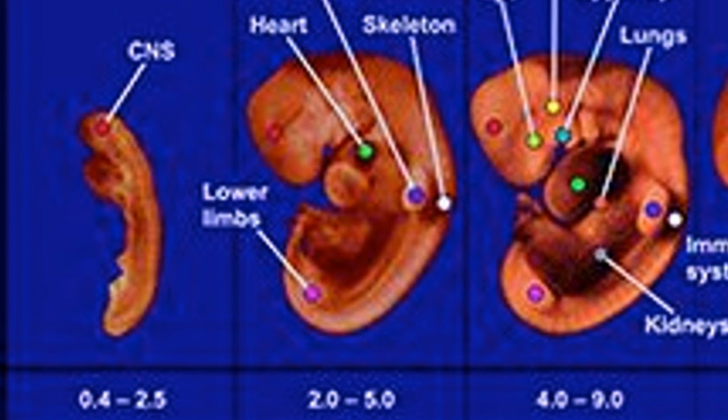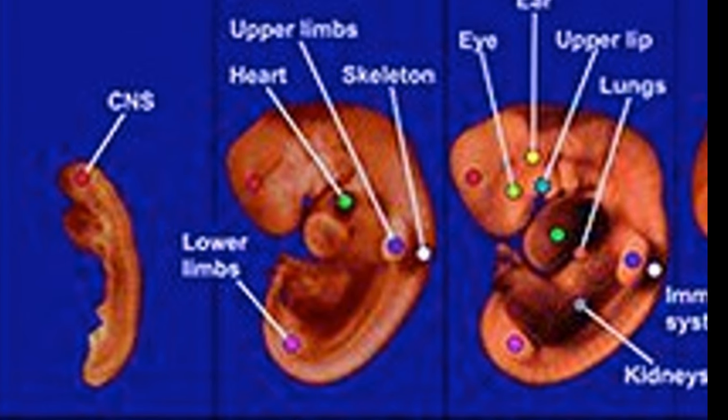In week 5, the baby is about 4 to 9 mm long. In this week, the kidneys, lungs, upper lip, and ears begin to form. The eyes develop further. The mother has now missed her period for about 3 weeks.